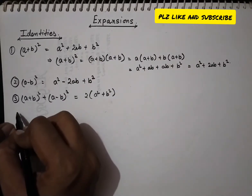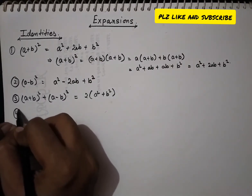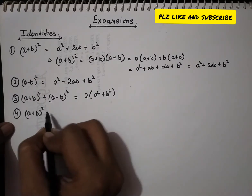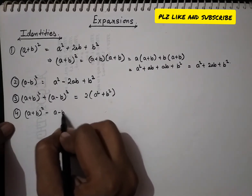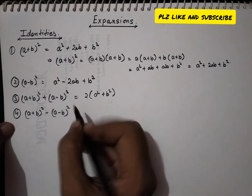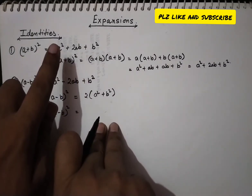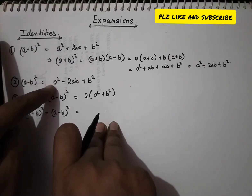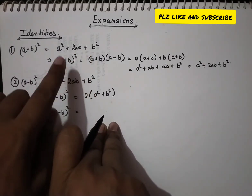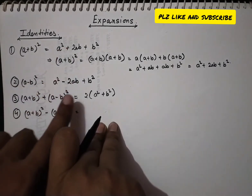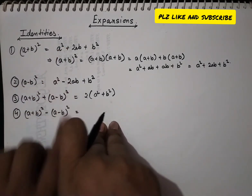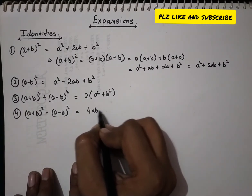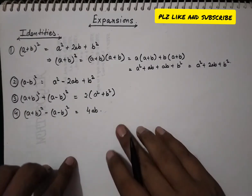If we subtract: (a + b)² − (a − b)², the a² terms and b² terms cancel out, and we are left with 4ab. So we get two more identities from the sum and difference of the above two.